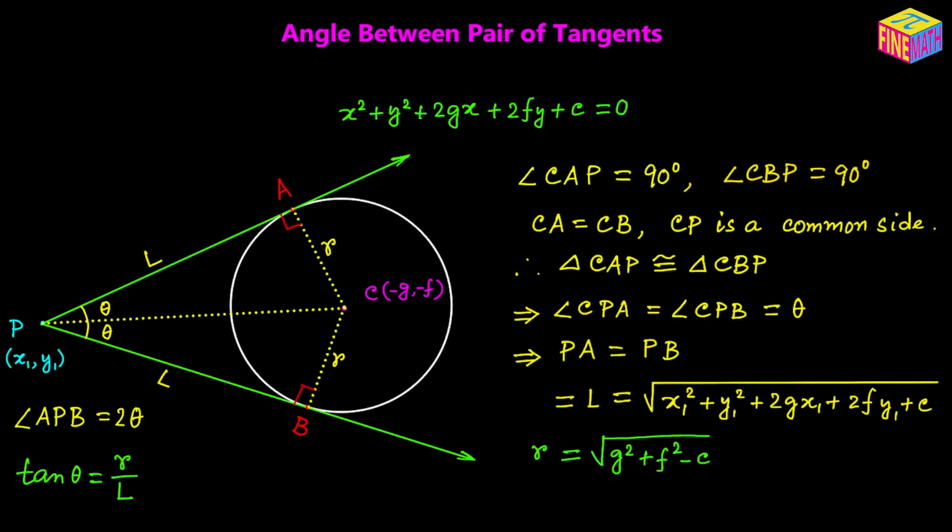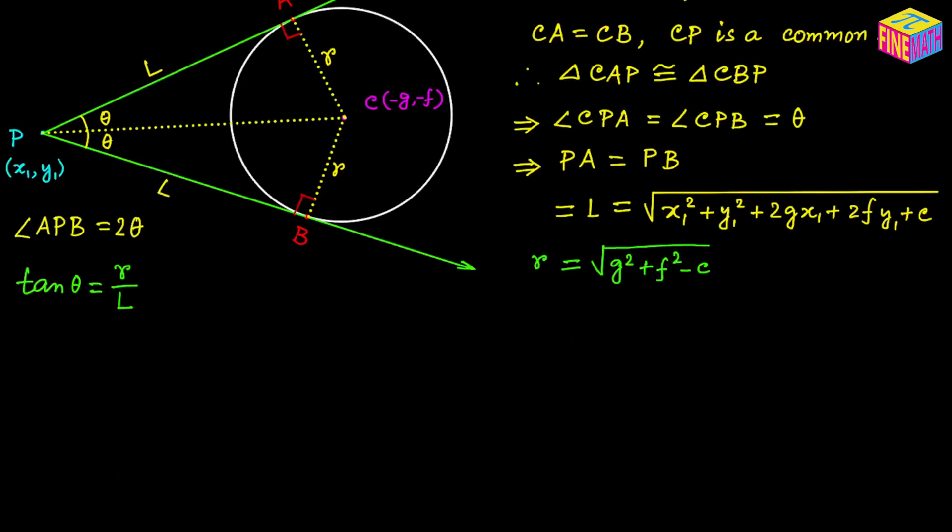We have to find the value of 2 times theta — the angle APB. So we need a trigonometric relationship involving 2 theta. Let's think about tangent of 2 theta. Can we express it in terms of tangent of theta? If we can, then we can easily calculate it, since we already know tangent of theta equals R over L.